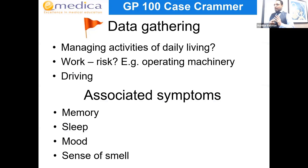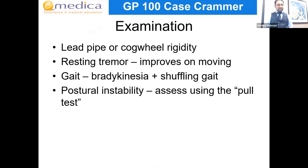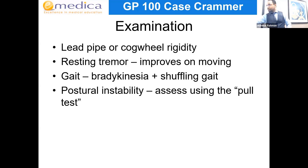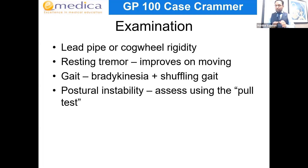Things you absolutely mustn't miss include how they're managing with activities of daily living — if someone can't cope and lives alone, that's an indication to refer more quickly, within two weeks for example. Also consider occupational safety, such as if they operate machinery and are having trouble with fine movement — that could be a real safety issue. In terms of examination, look for rigidity — lead pipe or cogwheel rigidity — and a resting tremor. Ask them to walk to the end of the room and back so you can see difficulty initiating movement and that shuffling gait. You can also do the pull test, which is a test for postural instability.